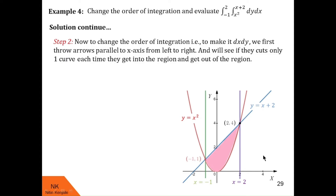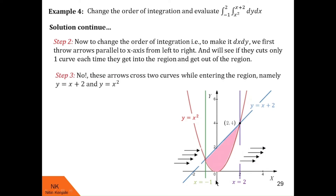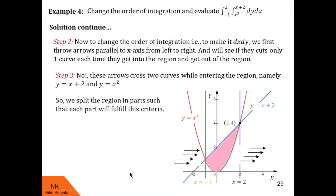In step 2, to change the order to dx dy, we throw arrows parallel to the x-axis from left to right and check if they cut only one curve each time. What we see is that these arrows enter the region by crossing both the blue curve and the red curve — namely y = x plus 2 and y = x squared. So we have to split the region into parts to fulfill this criterion. We divide it into two parts, calling them R1 and R2.